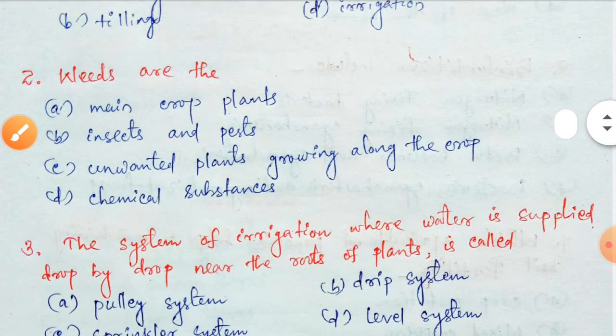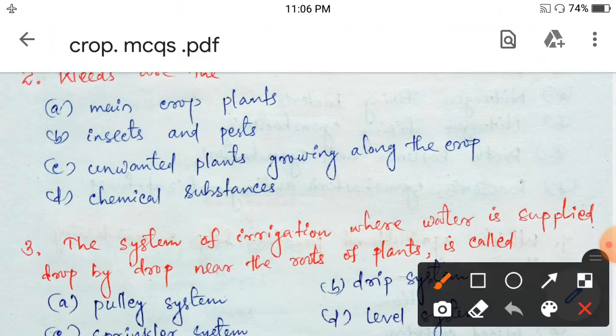Next question: weeds are — the main crop plants, insects and pests, unwanted plants growing along the crop, or chemical substances? Weeds are the unwanted plants growing along the crop. That is option C.